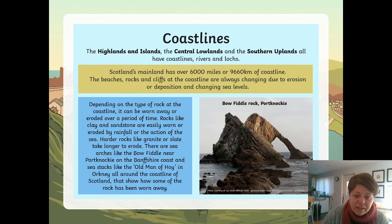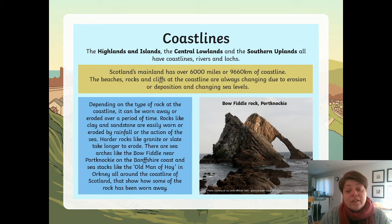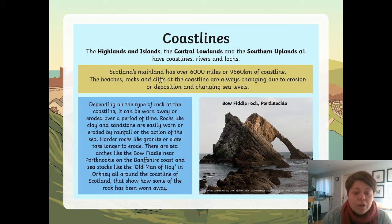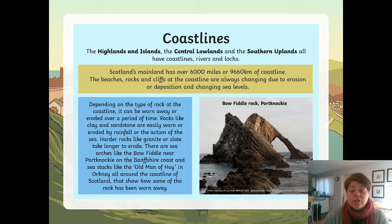The Highlands and Islands, the Central Lowlands and the Southern Uplands all have coastlines, rivers and lochs — because we are part of an island. Scotland's mainland has over 6,000 miles or 9,660 kilometres of coastline.